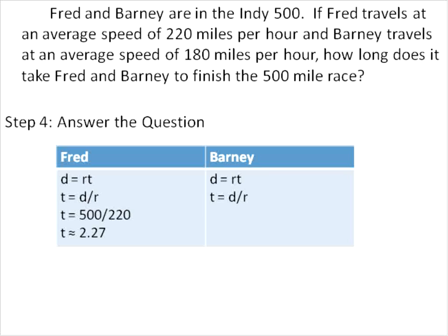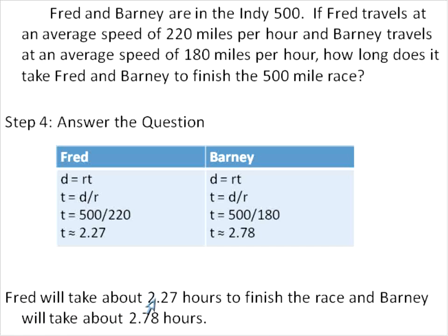I'll do the same for Barney. I transform the equation to solve for time, then substitute the information I know: the race is 500 miles and he's traveling at 180 miles per hour. Dividing those numbers, the time is approximately 2.78 hours. Now that I've answered the question mathematically, I also want to write a sentence: Fred will take about 2.27 hours to finish the race; Barney will take about 2.78 hours. When a question is posed in a sentence, you should answer in a sentence.